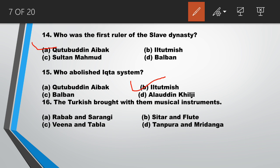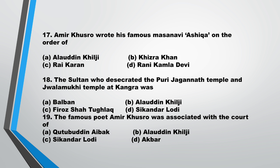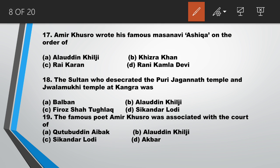Question number 16: the Turks brought with them musical instruments. Answer is A, Rabab and Sarangi. Question number 17: Amir Khusro wrote his famous Masnavi Ashiqa on the order of answer A, Alauddin Khilji. Question number 18: the Sultan who desecrated the Puri Jagannath Temple and Jwalamukhi Temple at Kangra was answer C, Firoz Shah Tughlaq.